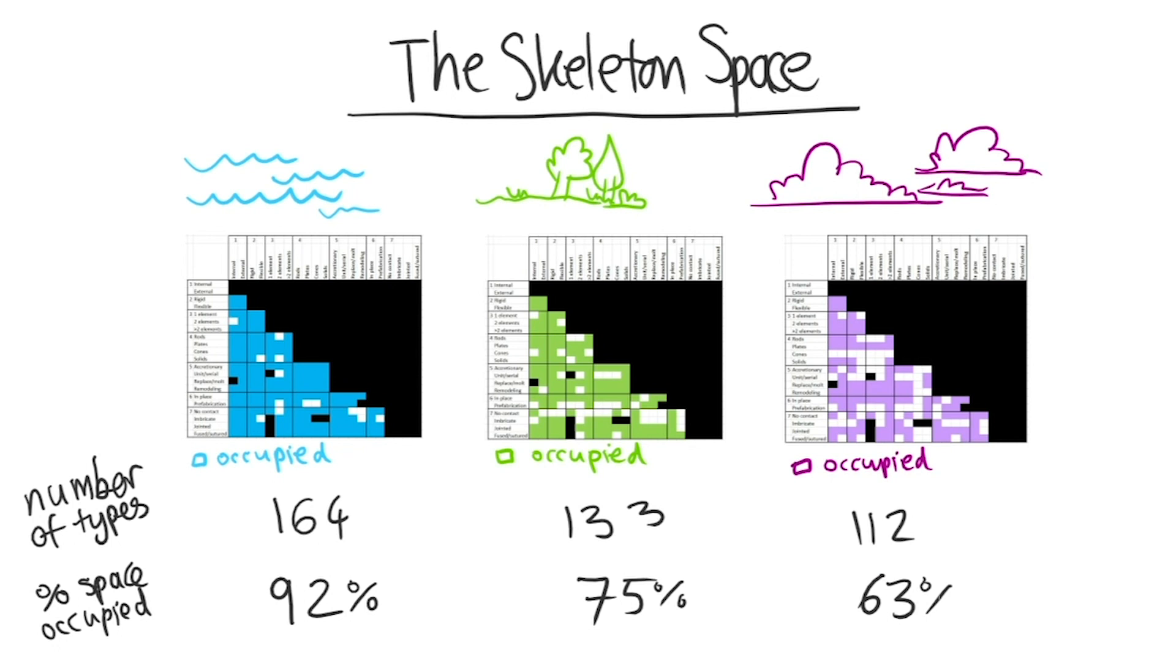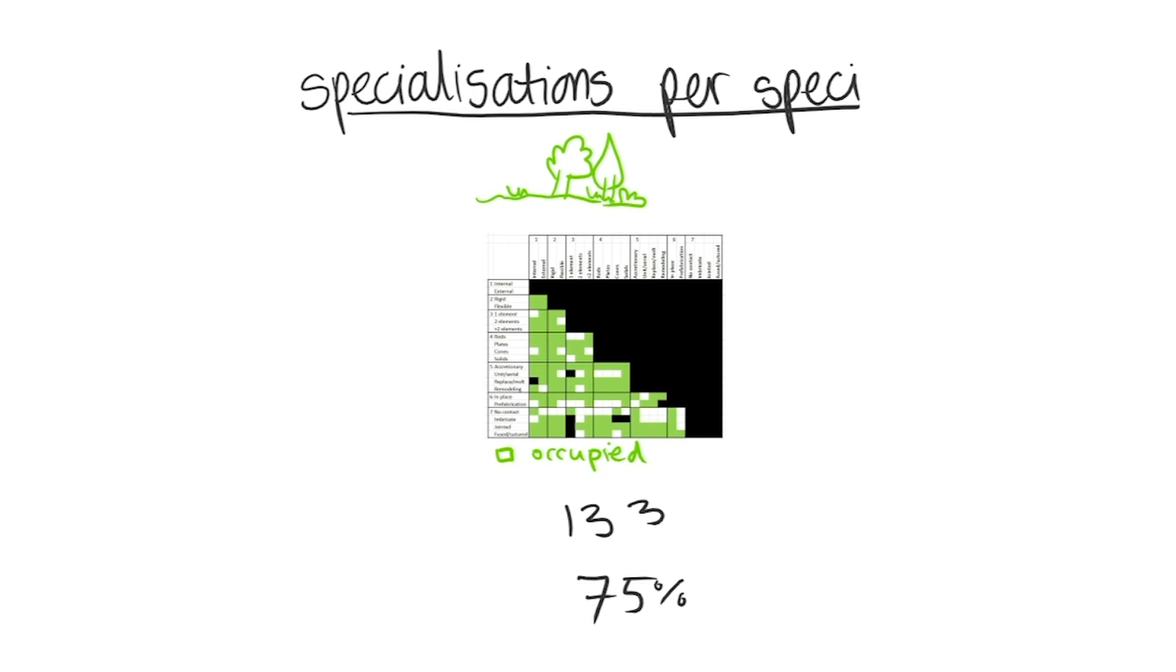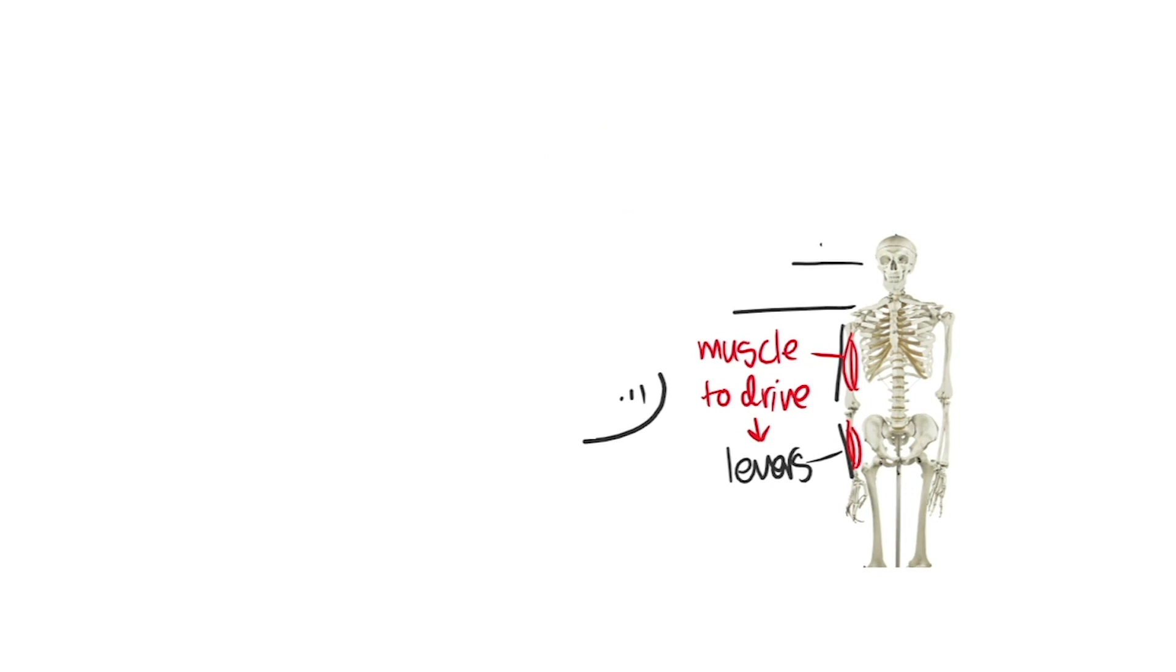In summary, the optimum number of skeleton types is determined by a combination of absolute constraints that become more specific if you narrow down the group of animals that you're talking about. Within these groups, each individual species will have a skeleton uniquely optimised to the constraints of its environment, prioritising certain functions over conflicting ones. In the case of humans, our own hard bones act like levers controlled by muscles, optimised to fast movement but not for external protection as we have behavioural adaptations to avoid danger instead.